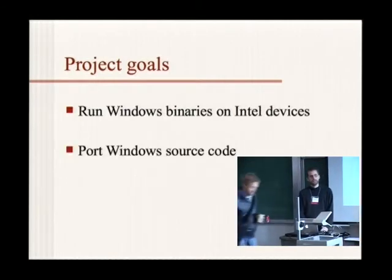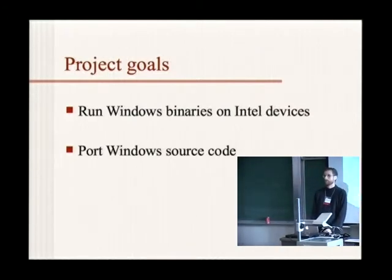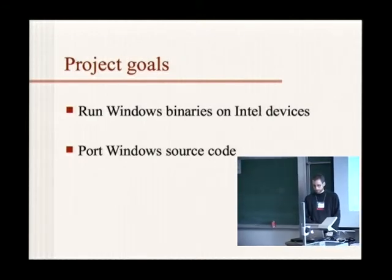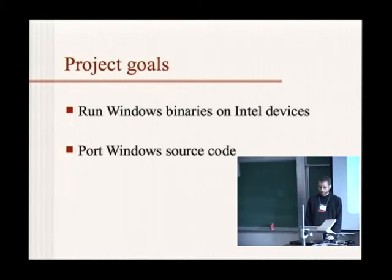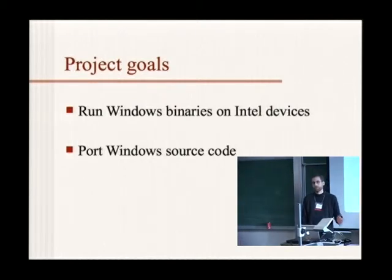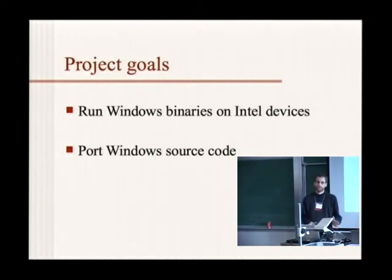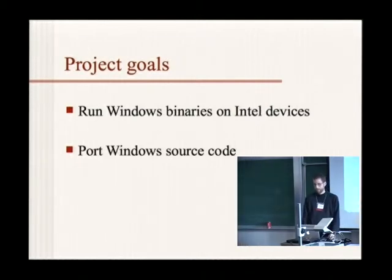The other possibility is to use Wine to port Windows source code to create native Android binaries. This opens the possibility to support ARM devices. The tricky part is you need the source code for the entire application, which most vendors don't have. Most Windows apps also use some kind of third-party DLL, and then you get into the CPU compatibility problem again.